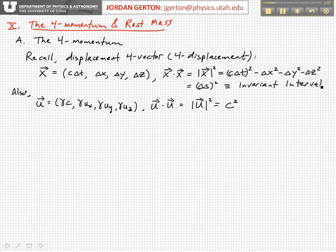We also defined the four velocity u, whose components are gamma c, gamma ux, gamma uy, gamma uz. And we also found that if you dot the four velocity into itself, you get the speed of light squared, also an invariant, a scalar.